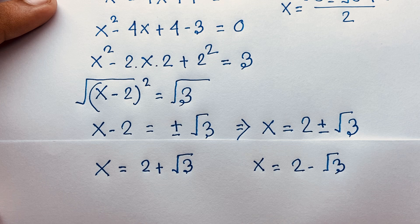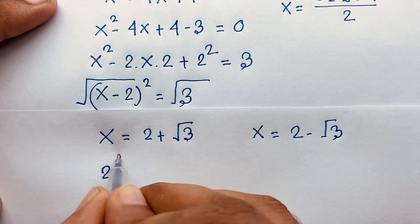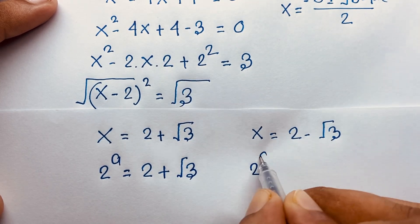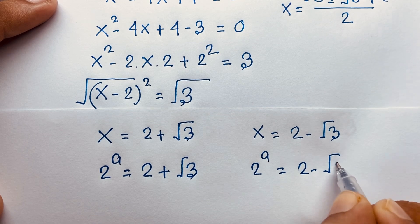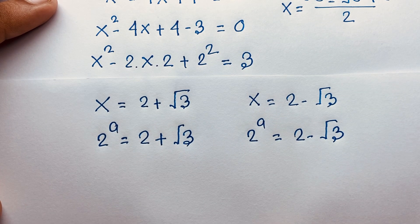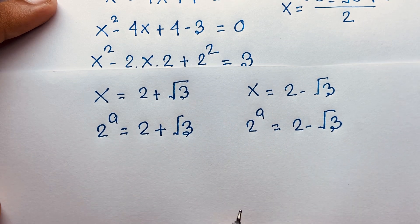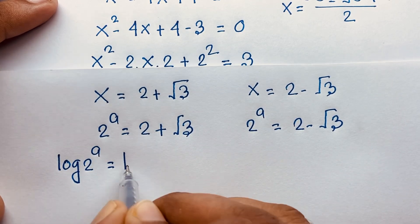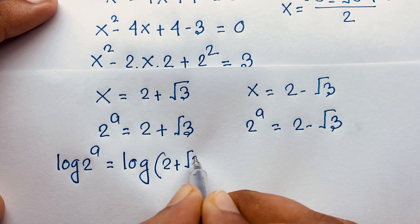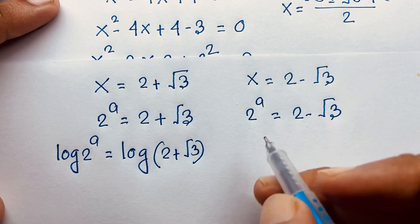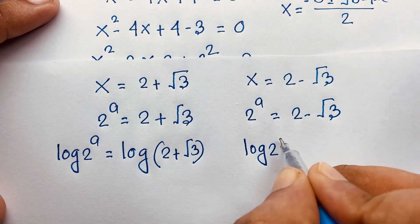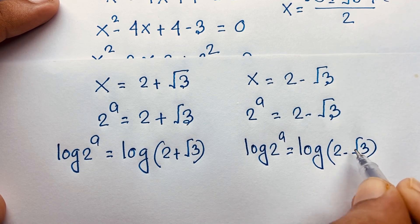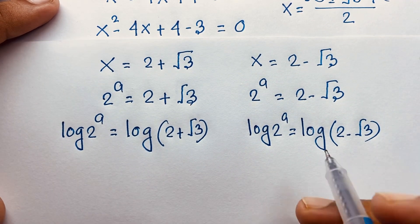Remember that x equals 2 to the power a. So 2 to the power a equals 2 plus square root 3, and 2 to the power a equals 2 minus square root 3. This is a positive value, so I can use natural log on both sides.